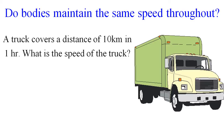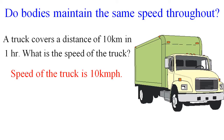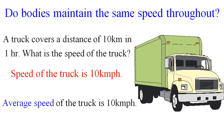Do bodies maintain the same speed throughout their journey? Consider a truck that covers a distance of 10 km in 1 hour. You can calculate the speed as 10 km/h. But does the truck actually travel at exactly 10 km/h throughout? No — the body changes its speed. So 10 km/h is not the actual speed at every instant; it is the average speed of the truck.